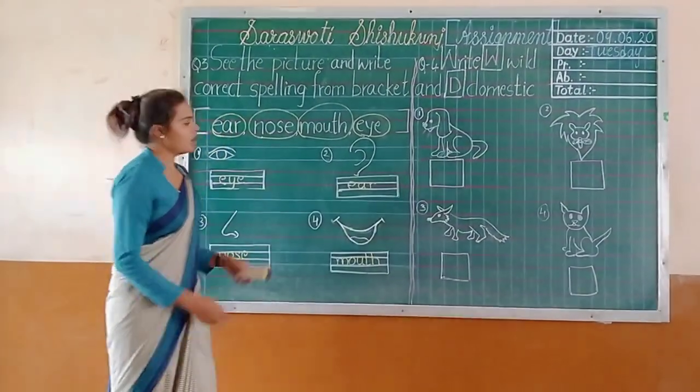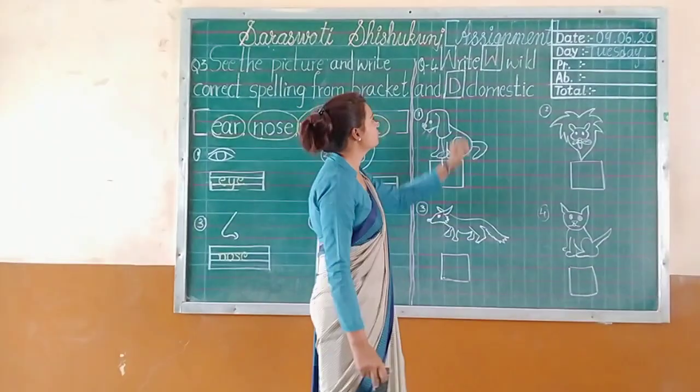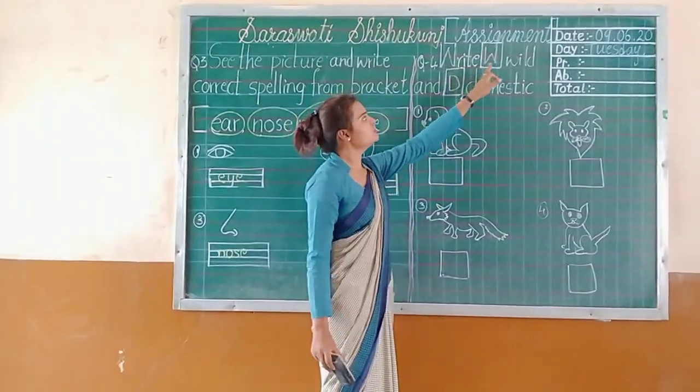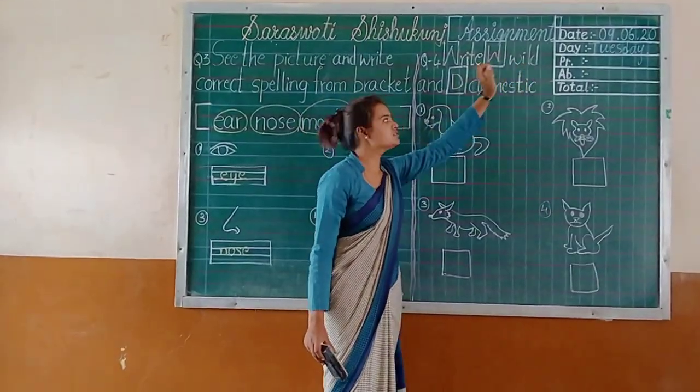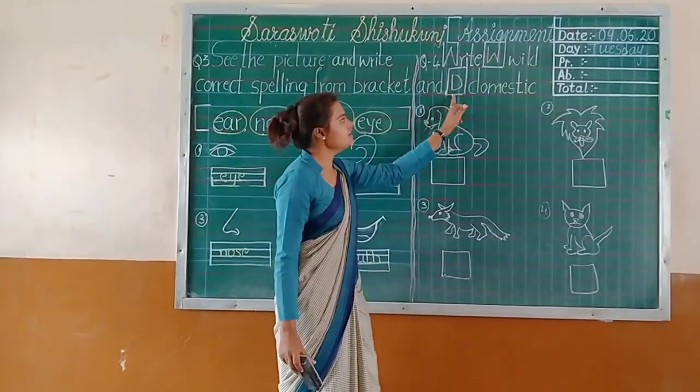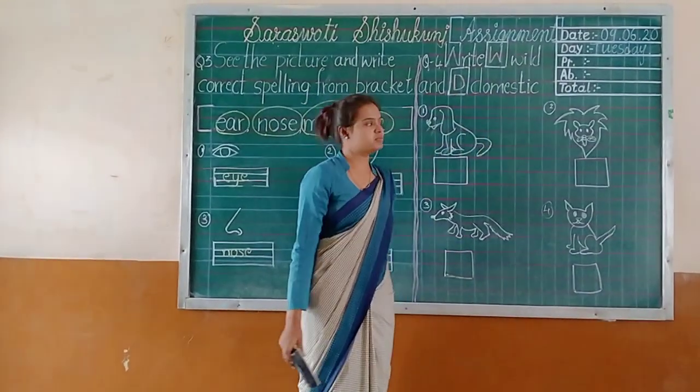Now, question number four. Write a W for wild animals and D for domestic animals.